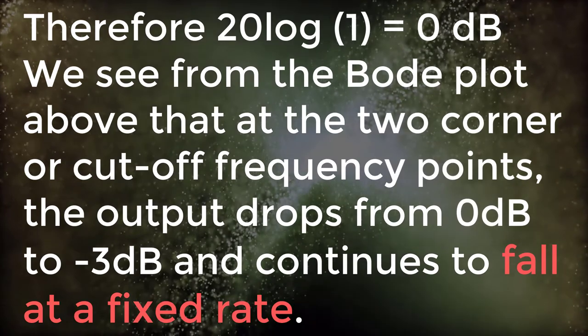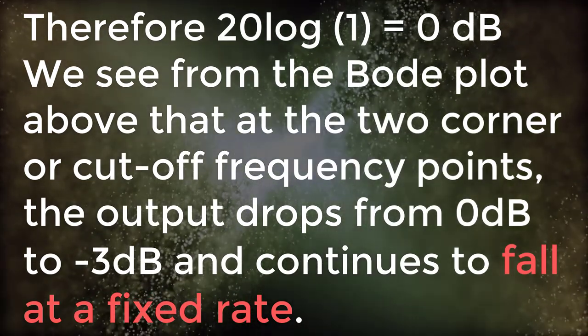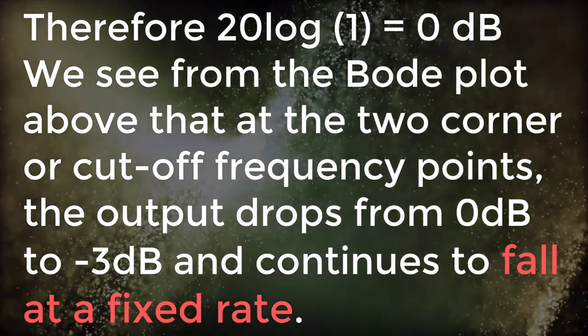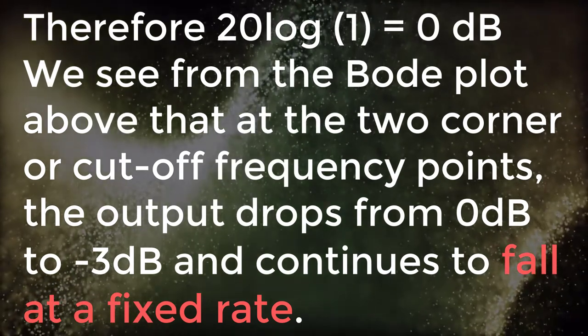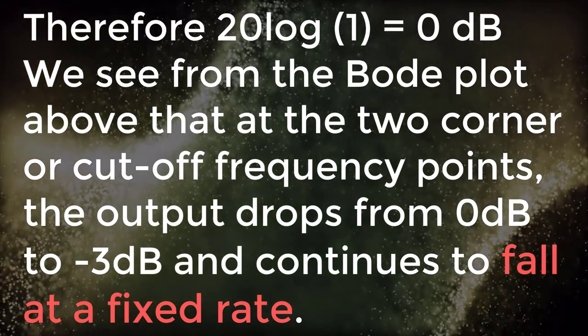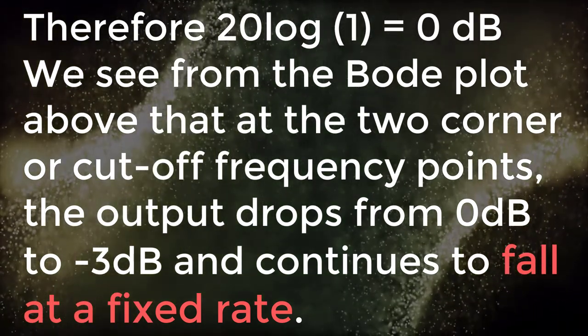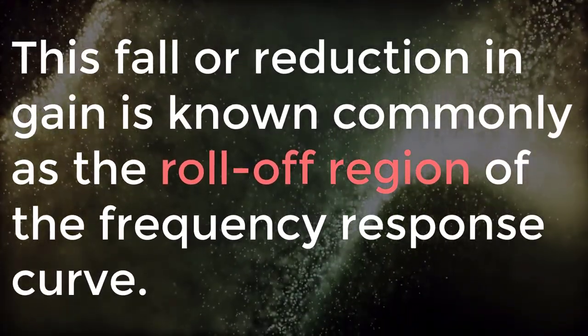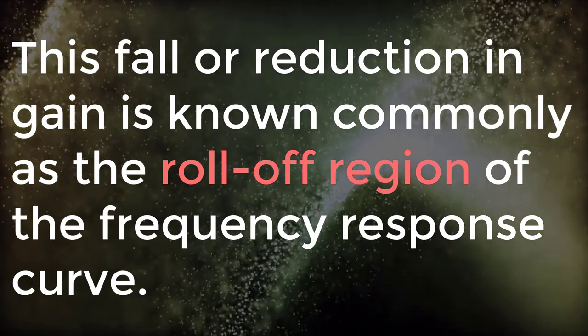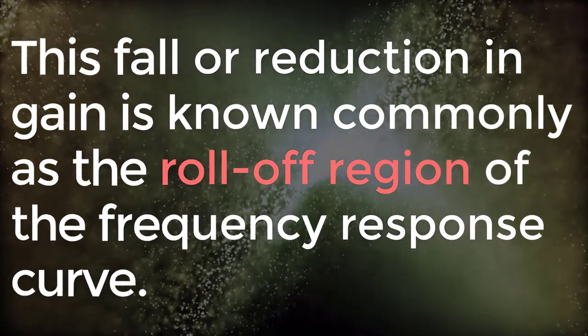We see from the Bode plot above that at the two corner or cutoff frequency points, the output drops from 0 dB to minus 3 dB and continues to fall at a fixed rate. This fall or reduction in gain is known commonly as the roll-off region of the frequency response curve.